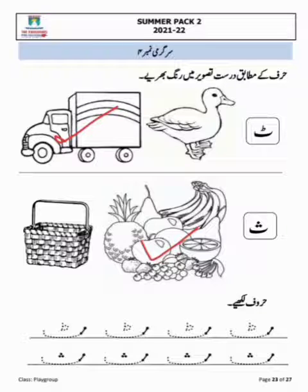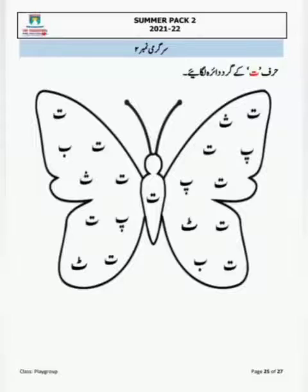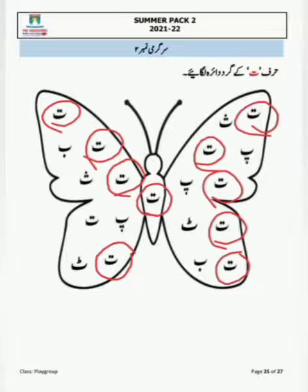Playgroup class، اگلے صفحے پر آپ نے حرف 'تے' کو تلاش کرنا ہے اور اس کے اوپر دائرہ لگانا ہے۔ جس کے اوپر دو نکتے ہوں وہ 'تے' ہے — جیسے تتلی کی دو آنکھیں، ویسے تے کے اوپر دو نکتے۔ جہاں جہاں تے ملے، اس کے اوپر دائرہ لگا دینا۔